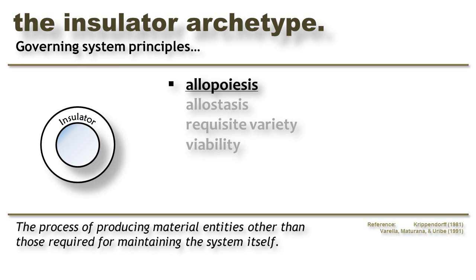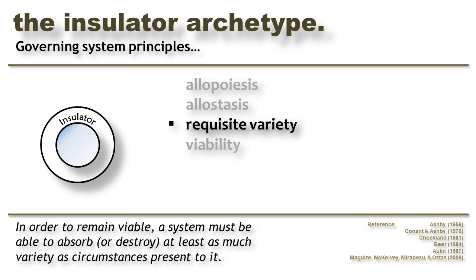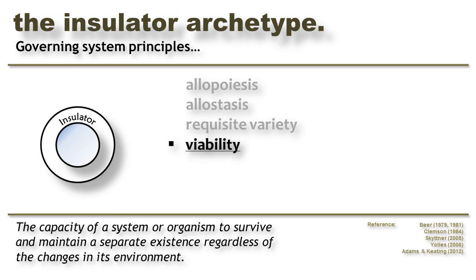The Insulator is characterized by the following system principles. We'll begin with allopoiesis — where autopoiesis is the process by which systems rebuild and regenerate themselves, allopoiesis refers to the system's ability to construct things outside of itself, for example the system's external insulation. Allostasis is also seen in the Insulator archetype: the Insulator survives by predicting the risks that will occur in the future and proactively taking steps to insulate against them. The law of requisite variety is another governing principle — however, in the case of this archetype, the Insulator survives by transferring the responsibility for absorbing variety from itself to an external entity. Likewise, it pursues viability by allowing the effects of entropy to accumulate in its external insulation, which can be replaced as necessary.